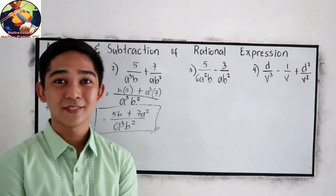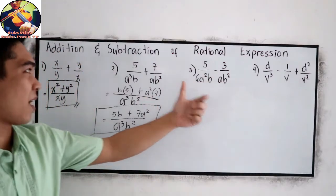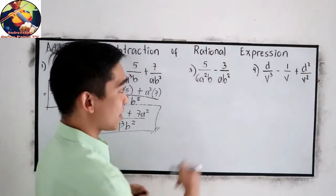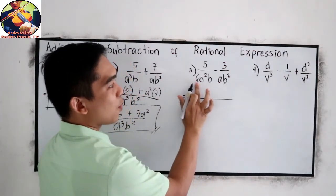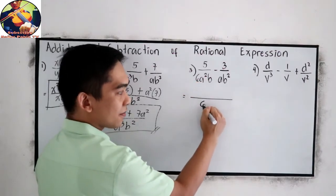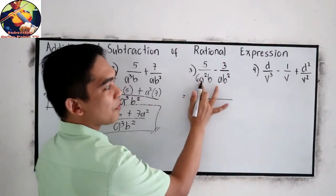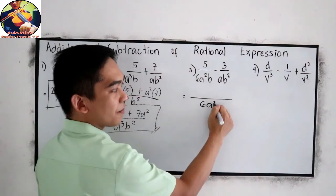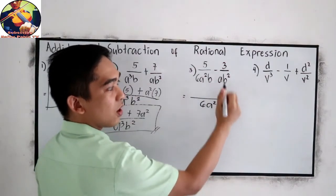Let's check number 3. The same process with number 2 and number 1, let's find the LCD first. Our coefficients are 6 and 1, so highest is 6. And for variable, just copy the variable with highest exponent. For a, we have the squared. And for b, we have also the squared.